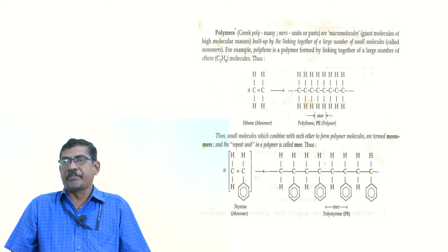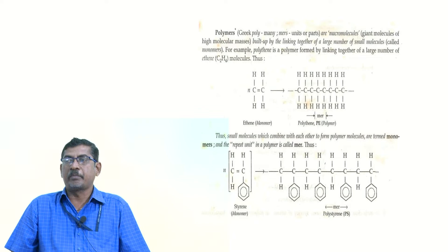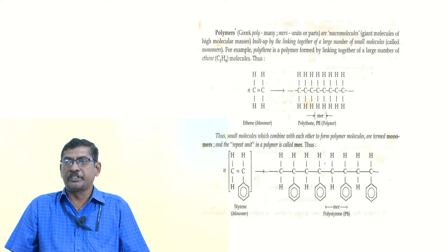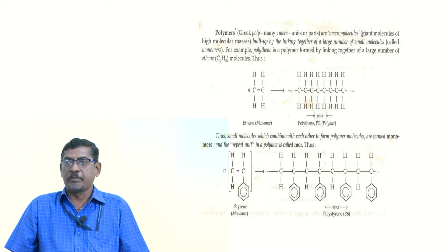Another example is the formation of polystyrene. N number of styrene molecules are combined in the presence of temperature, pressure, and catalyst to form polystyrene. The styrene molecular formula is CH=CH₂ with a C₆H₅ phenyl group attached.